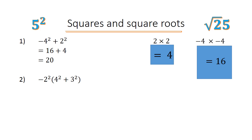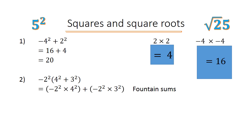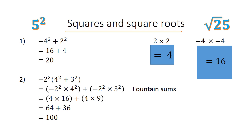Negative 2 to the power of 2 in brackets, 4 to the power of 2 plus 3 to the power of 2, equals negative 2 to the power of 2 times 4 to the power of 2, plus negative 2 to the power of 2 times 3 to the power of 2. We call this the fountain sums. Equals: in brackets 4 times 16, plus in brackets 4 times 9. Equals 64 plus 36, equals 100.